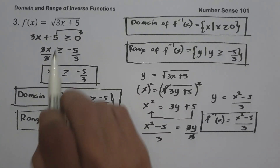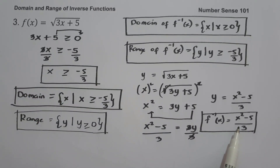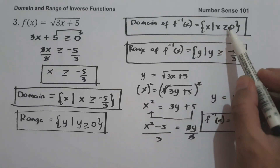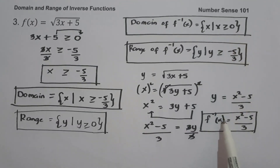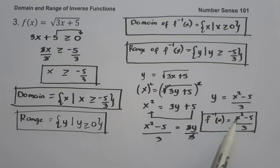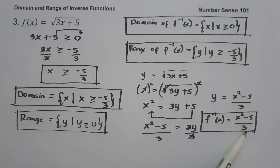As you can see, the inverse of the given function is a quadratic function, and a quadratic function is not one-to-one. To find the domain, we apply the restriction x greater than or equal to 0. To find the range, we set x equal to 0 and get y greater than or equal to negative 5 over 3.